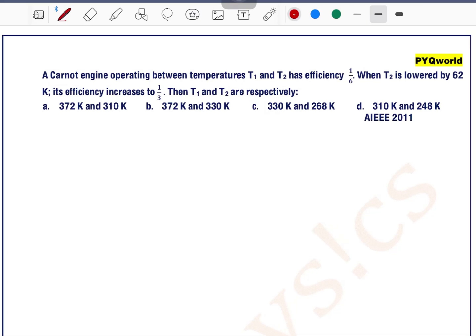A Carnot engine operating between temperature T1 and T2 has an efficiency of 1 by 6. When T2 is lowered by 62 Kelvin, its efficiency increases to 1 by 3. Then T1 and T2 are respectively.